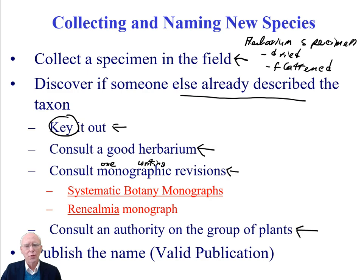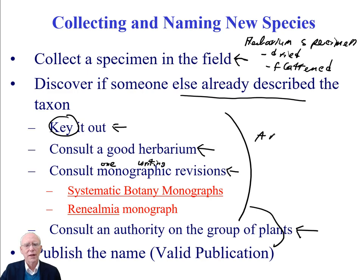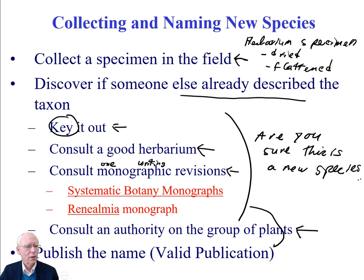You can also consult an authority on the group of plants. So if you thought you had a new species of Rhenialmia from Costa Rica, you would consult Paul Moss and ask him if he knows of this species or if it could be new. Once you've done all of that and you're pretty sure you've got a new species, you want to publish the name. There are now rules set down for how you're going to publish that name in order to get the scientific community to take it seriously. If you don't follow these rules, other systematists could just ignore your name.